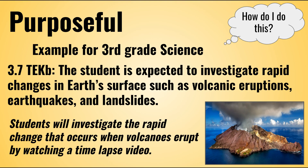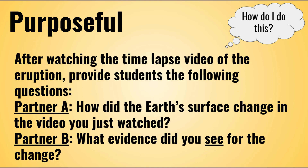Let's look at an example for third grade science. First, we look at the actual TEK 3.7B: the student is expected to investigate rapid changes in Earth's surfaces, such as volcanic eruptions, earthquakes, and landslides. Then, the learning objective is: students will investigate the rapid change that occurs when volcanoes erupt by wide range after watching a time-lapse video. After watching the time-lapse video of the eruption, provide students the following questions — Partner A: How did the Earth's surface change in the video you just watched? Partner B: What evidence did you see for the change?